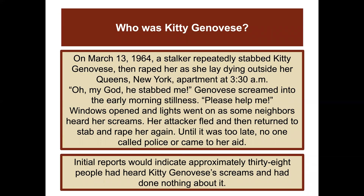Both Wilkins and Rusesabagina were displaying altruism — unselfish regard for the welfare of others. Kitty Genovese is one of the most famous stories within social psychology. On March 13, 1964, a stalker repeatedly stabbed Kitty Genovese and then raped her as she lay dying outside her Queens, New York apartment at 3:30 a.m. 'Oh my God, you stabbed me,' she screamed. 'Please help me.' Windows opened and lights went on as some neighbors heard her screams. Her attacker fled and then returned. Until it was too late, no one called the police or came to her aid. Initial reports indicated approximately 38 people had heard her screams and had done nothing.